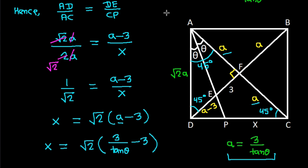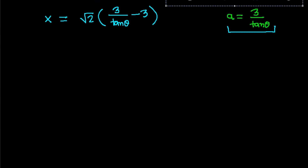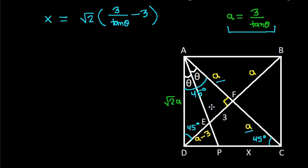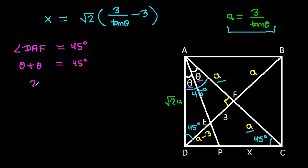Now angle DAF is theta plus theta, and angle BAF is 45 degrees, so 2 theta equals 45 degrees. Therefore theta = 45 over 2 = 22.5 degrees.